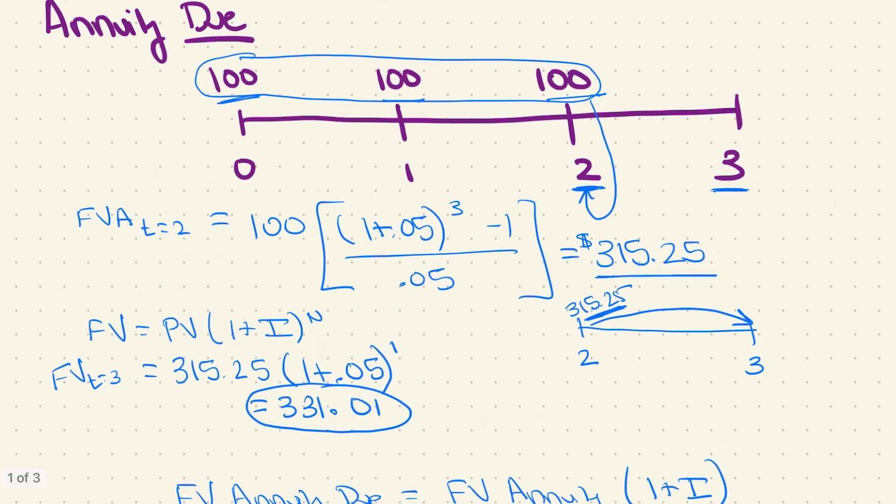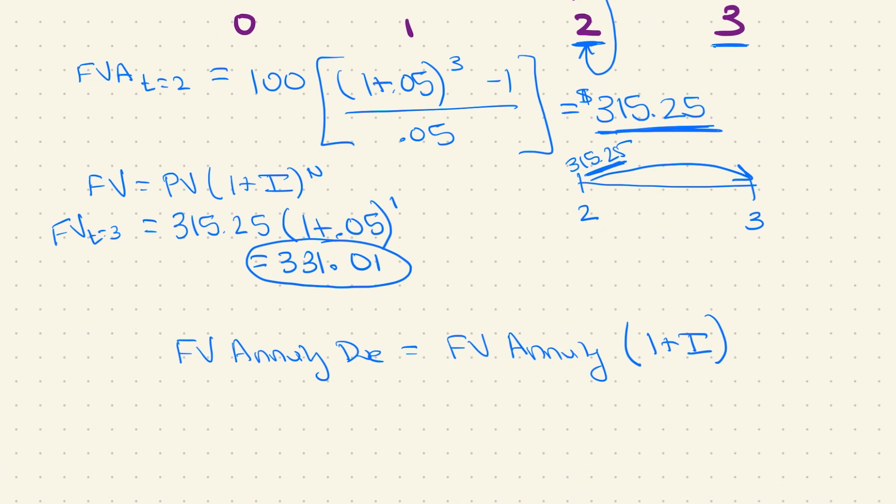So times one plus i. So first up, I calculate my regular annuity with three cash flows. Then because it's telling me at one time period too early, I'm going to bring it forward one more period, compounding it one time. So that becomes my equation for the future value of an annuity due.